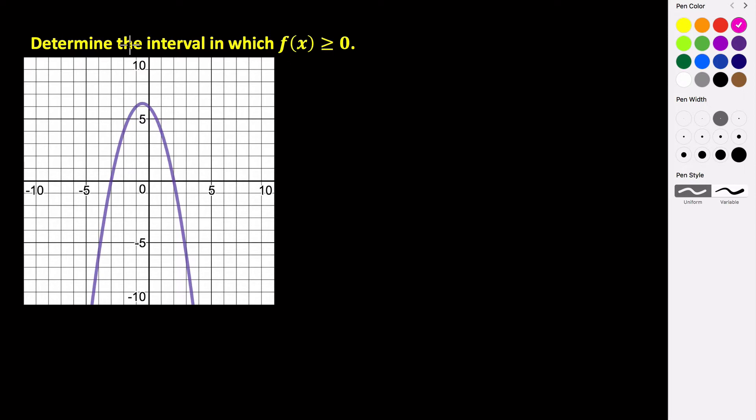And so this problem is asking us to determine the intervals in which the function is greater than or equal to zero. So what this means is where is our graph above the x-axis. So it basically means that our y values are positive.